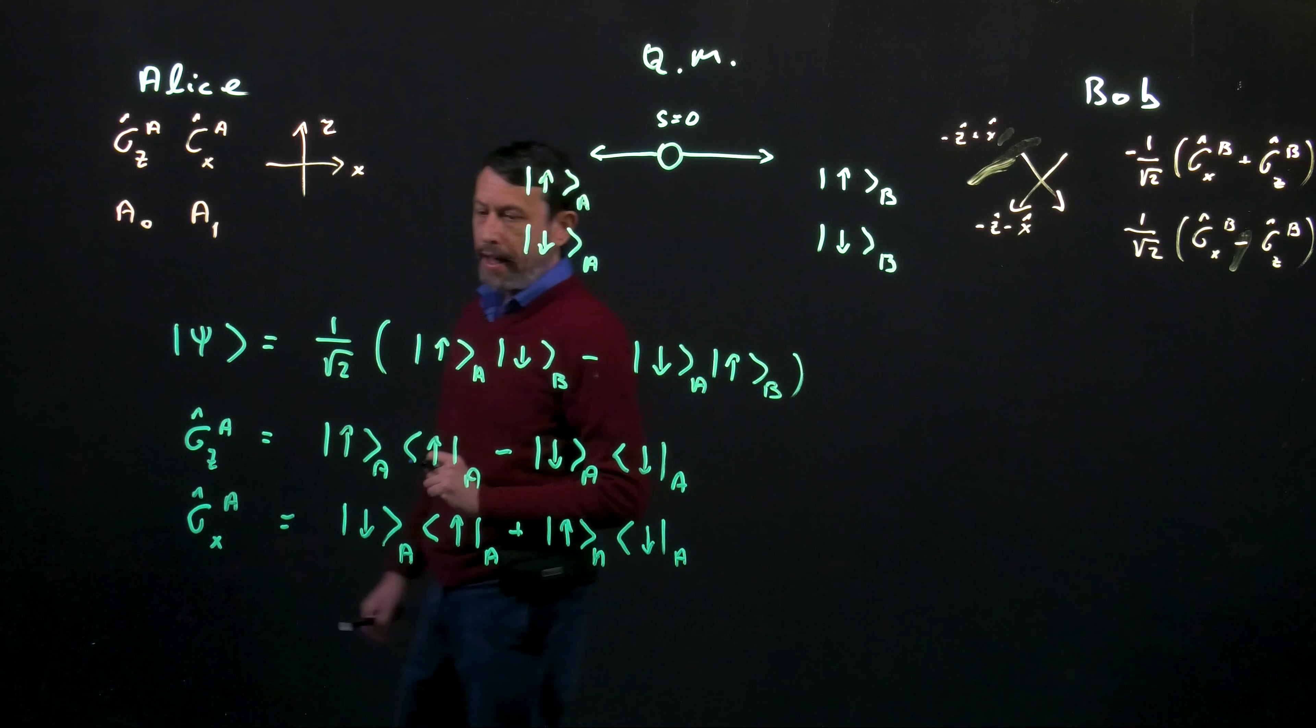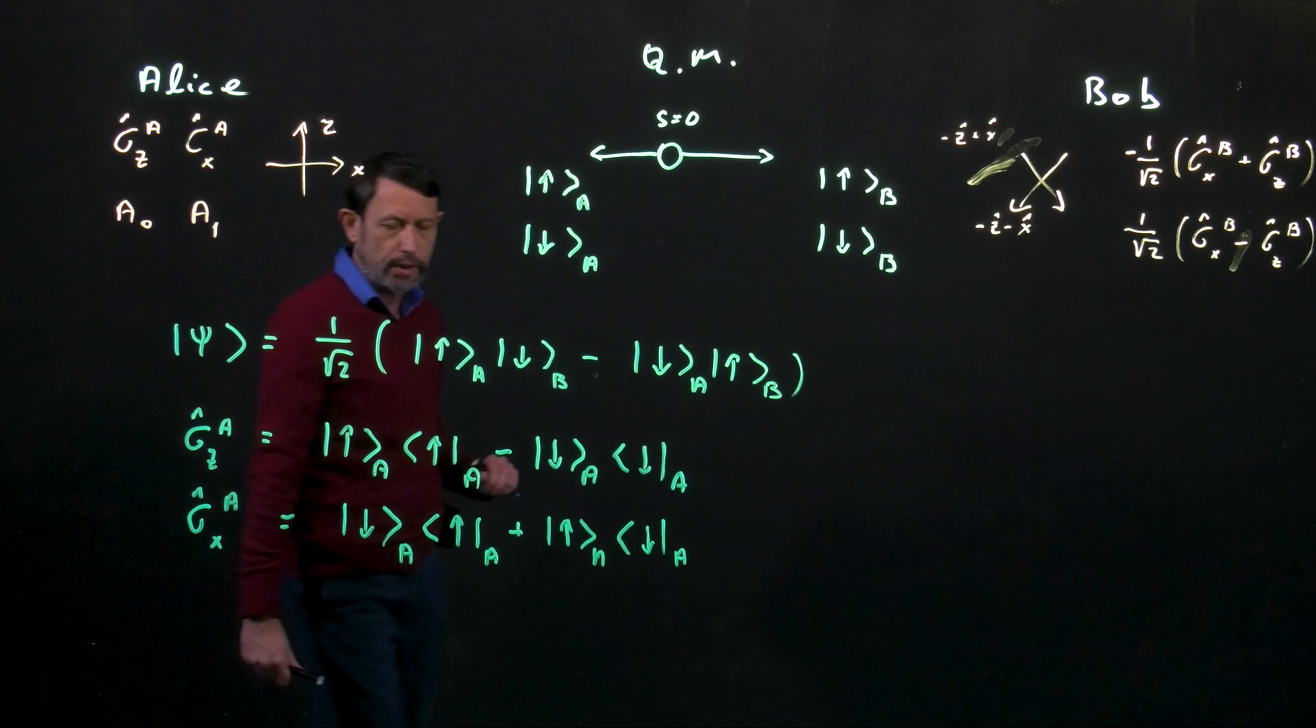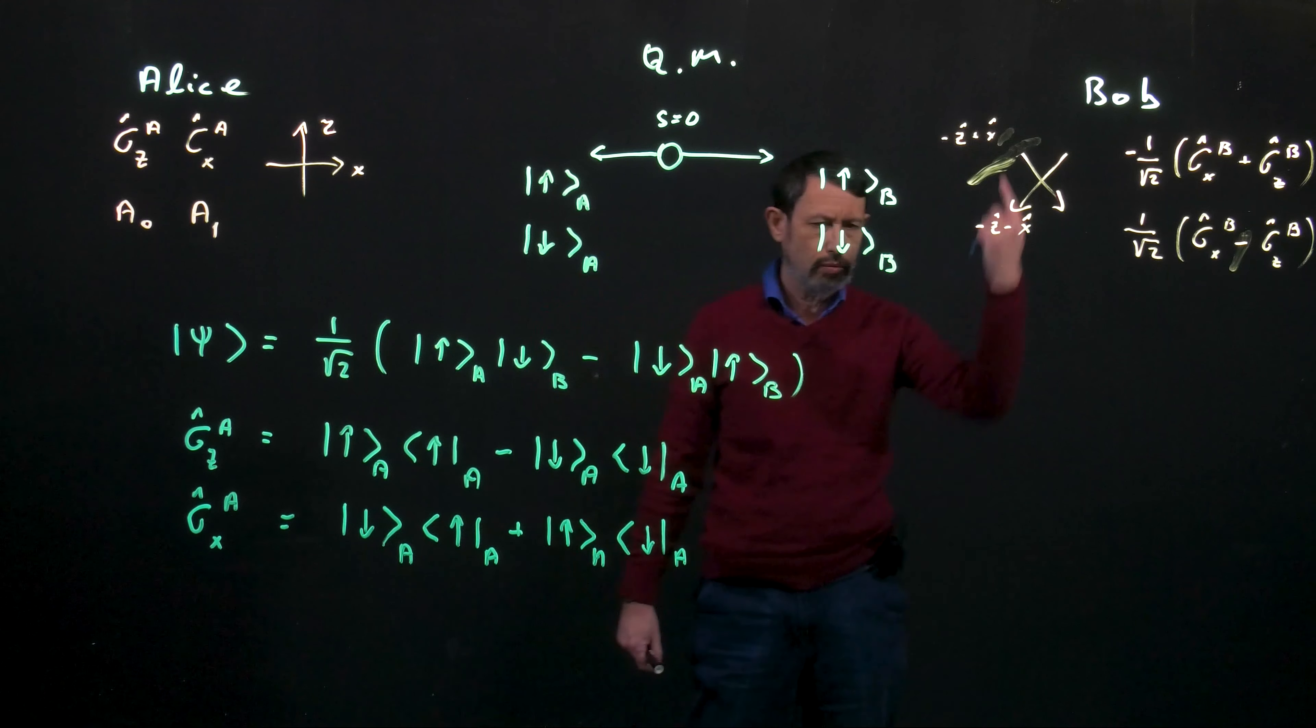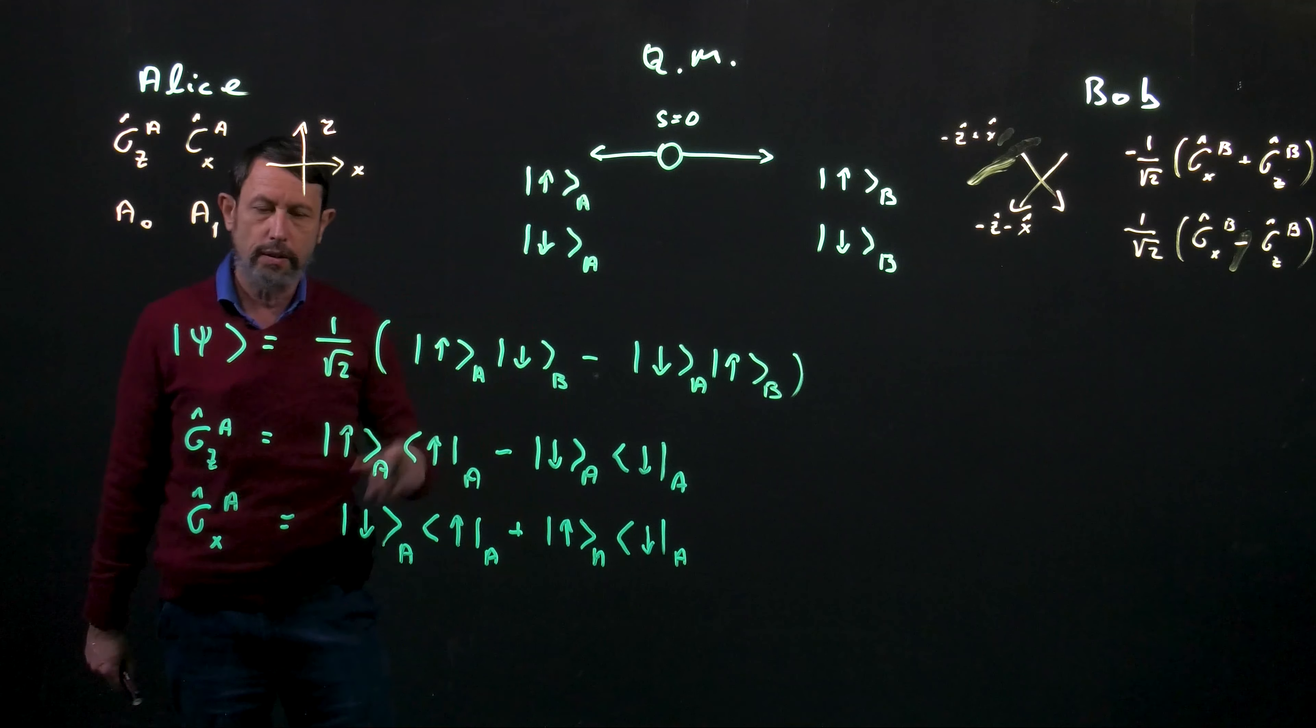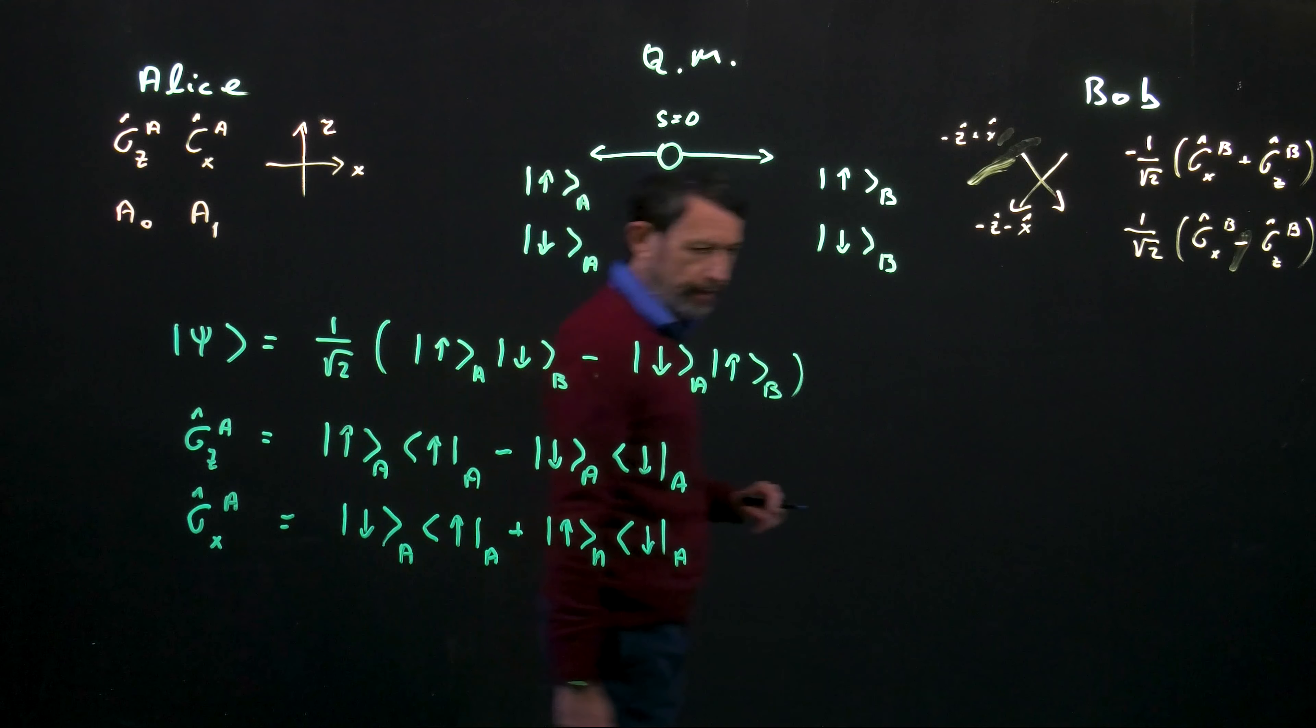For sigma x on the other hand, if we start with an up direction, we end up with a down and vice versa, meaning that sigma x actually flips the wave function.